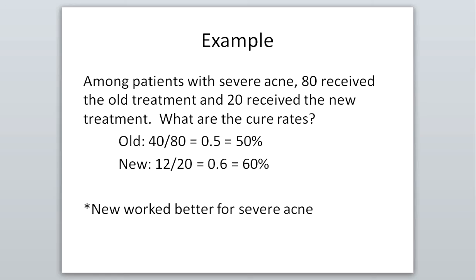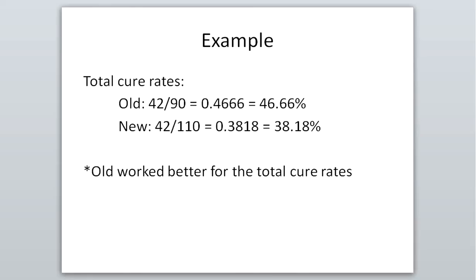But maybe the FDA comes along and looks at the total cure rates. There were 90 people total that received the old treatment, of whom 42 were cured, and there were 110 people total that received the new treatment, of whom 42 were cured. So the old treatment cured about 47 percent and the new treatment cured about 38 percent — therefore the old treatment worked better. The FDA could say the company is misrepresenting their results. So who's telling the truth — is it the company, saying that looking at mild versus severe separately the new did perform better in both cases, or the FDA, saying that overall the old works better than the new?